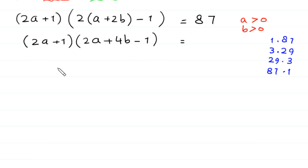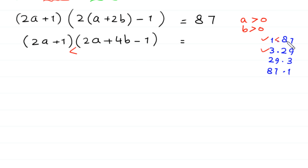Since 2a plus 1 must be the smaller factor, we select only the pairs 1 times 87 and 3 times 29, because 1 is smaller than 87 and 3 is smaller than 29. We reject the pairs 29 times 3 and 87 times 1. So we have two cases to solve.